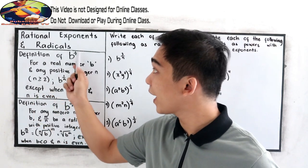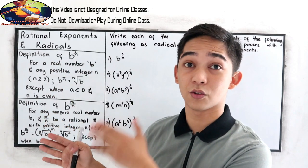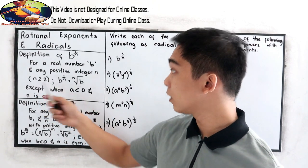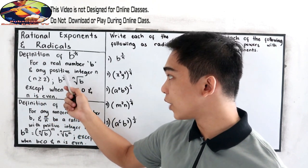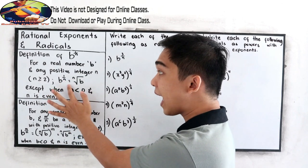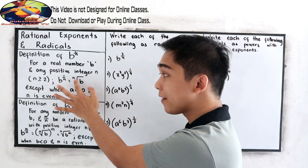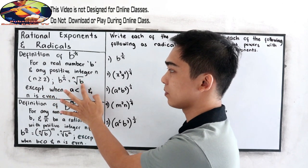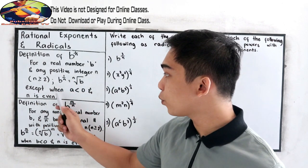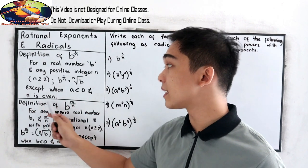That means the value of our N is 2, 3, 4, 5, 6, or greater than 2. So B raised to 1 over N can be written as N root of B. Now this is our radical form, except when A is less than 0 and N is even number.